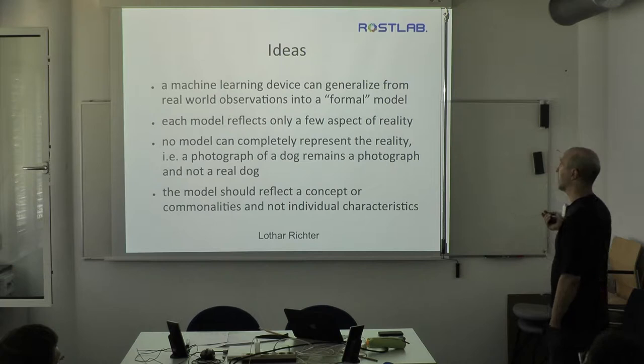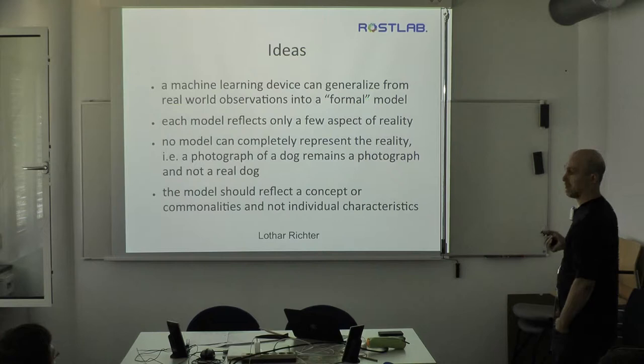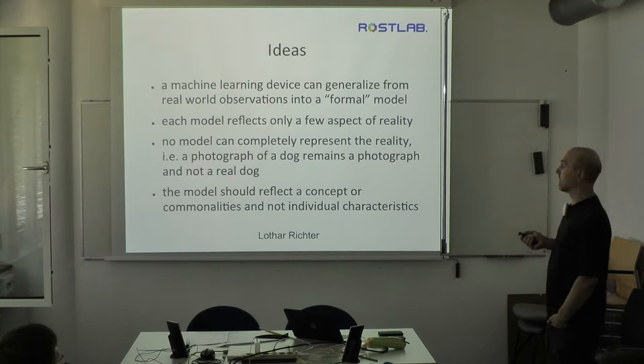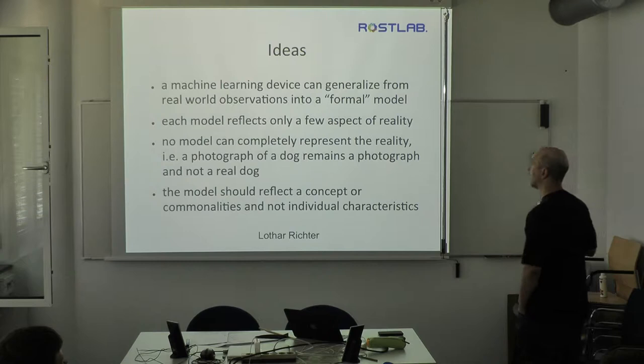The general idea of machine learning is that you have a device that can generalize from real-world observations into a formal model. This formal model can serve different purposes — on one hand it can be used to represent the data or to compress it, meaning saving space and gaining insights and making predictions. Formal means something you can represent in a mathematical notation or in a computer, and that's both the advantage and the disadvantage.